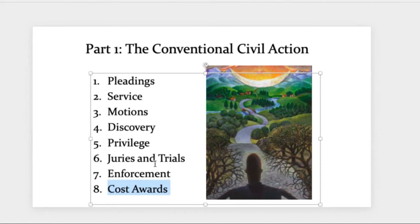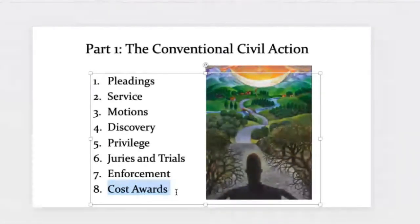The cost award is extra in the sense that it doesn't pertain to the real-world wrong that transpired and gave rise to the litigation. To deal with the real-world wrong, we look to general damages, aggravated damages, and punitive damages — which we talked about in the first week. Cost awards are about the litigation. They're meant to compensate parties for the fact that litigation was necessary, or compensate parties for the manner in which the litigation was conducted.